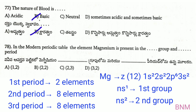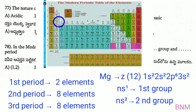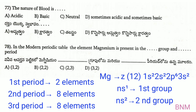Next, in the modern periodic table, the element magnesium is present in the dash group and dash period. Magnesium has atomic number 12, with electron configuration 1s², 2s², 2p⁶, 3s². The 3s² configuration means it is present in the second group. Magnesium is present in the third period. The answer is second group, third period — option C is the right answer.